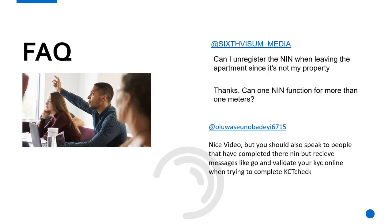A question from Six Vi: 'Can I unregister the NIN when leaving the apartment since it's not my property?' I think so, though I'm not entirely sure. Another question from the same user: 'Can one NIN function for more than one meter?' Your NIN can only function for one meter. A landlord may have more than one property and can use his NIN for multiple meters, but as an individual tenant you cannot use it for more than one meter.